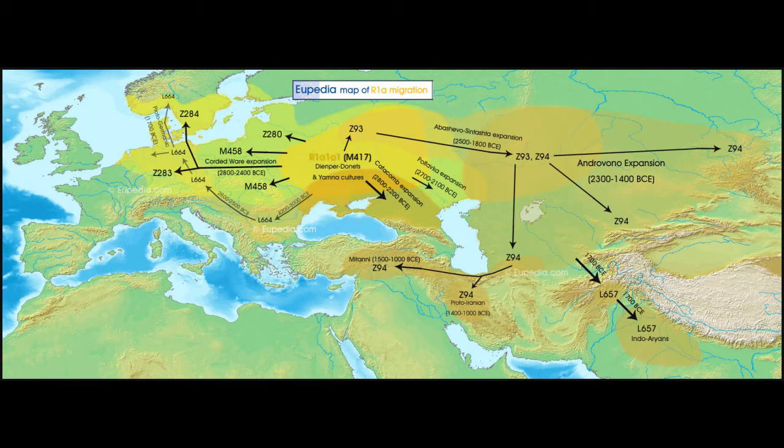Let's take a quick look at this. You can see here this is the Kurgan hypothesis, so it's one of the areas marked as the potential origin of R1a — above the Pontic Sea, the Dnieper-Donetsk culture and the Yamna culture. And you can see that there's a branch in the Abashevo-Sintashta expansion that moves east, carrying Z93 and Z94.